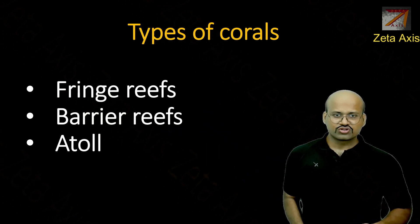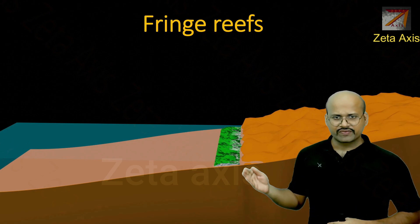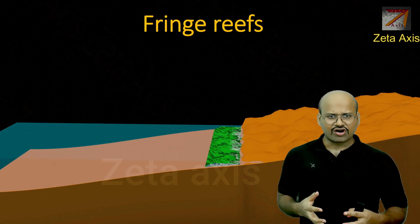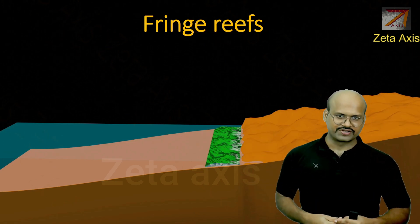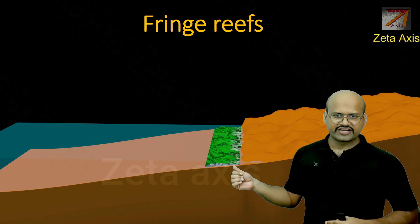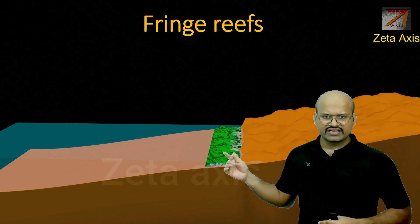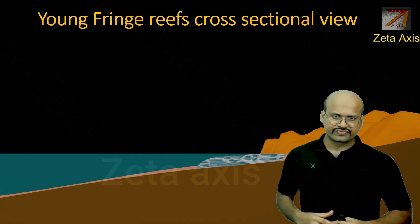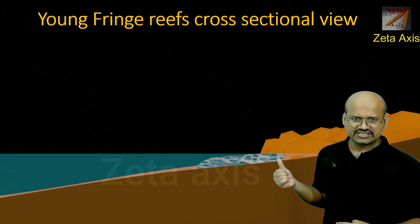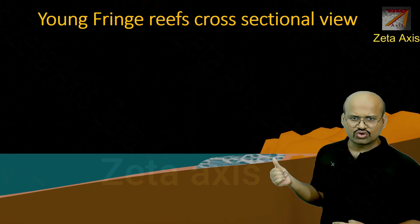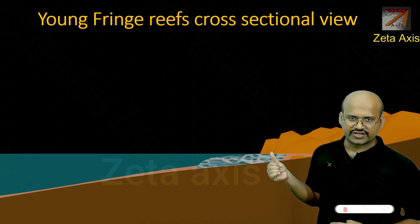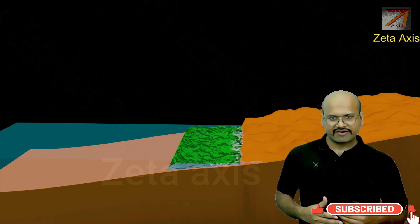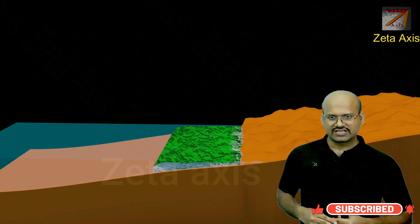Fringe reefs are reefs which develop very close to the coastline. This is the beginning of coral reef formation — the corals here are active. If we see the cross-section of a young fringe reef, we can see that there is no lagoon formed.